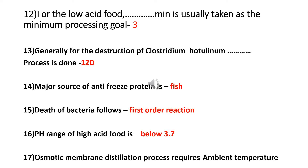Question 16: What is the pH range of high acid food? The pH range of high acid food is below 3.7.